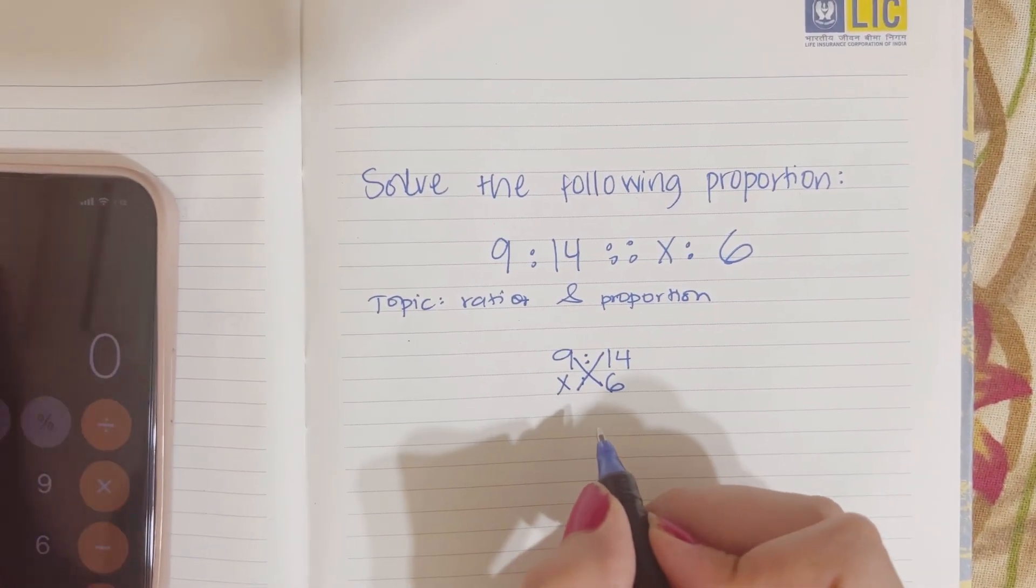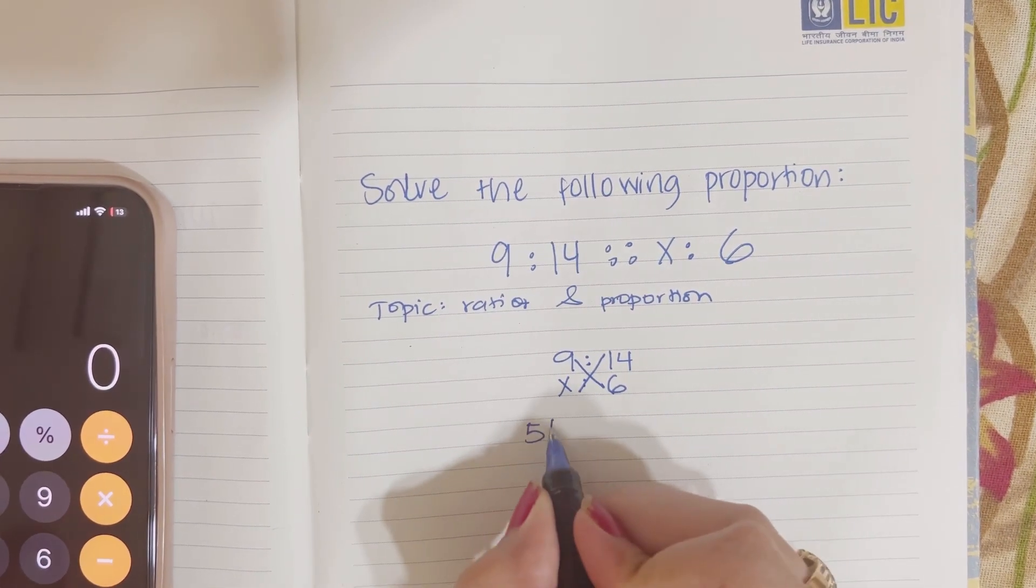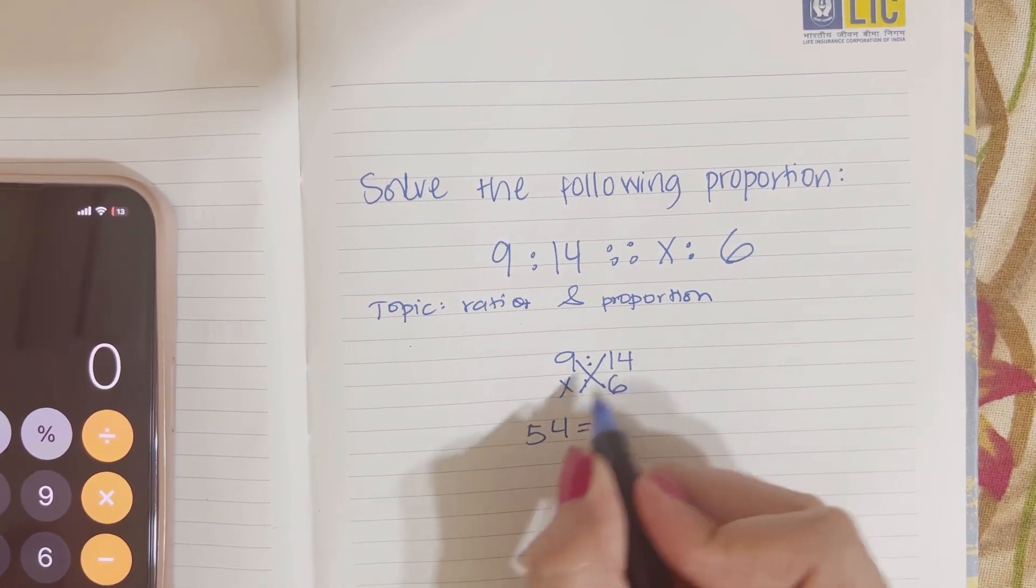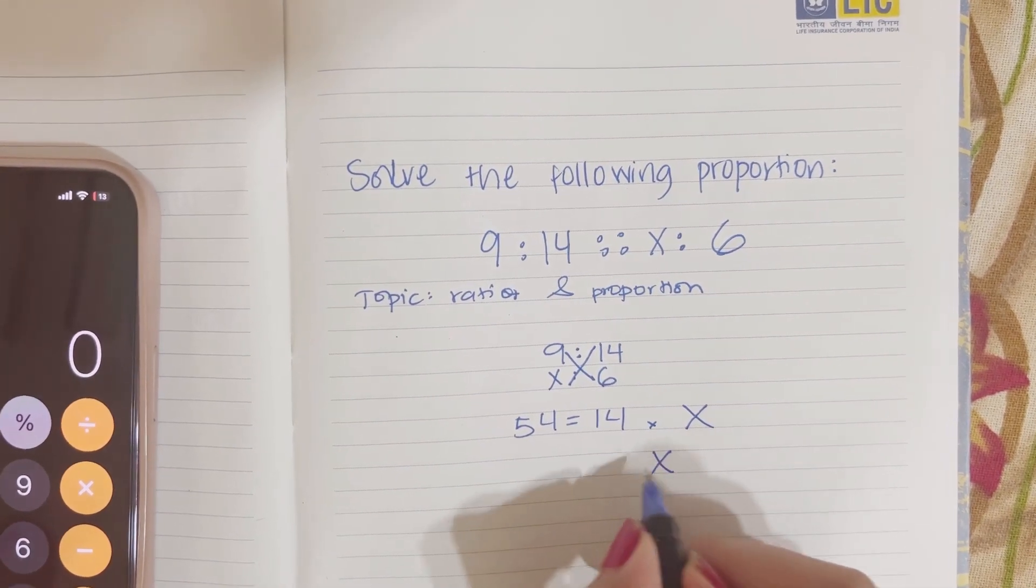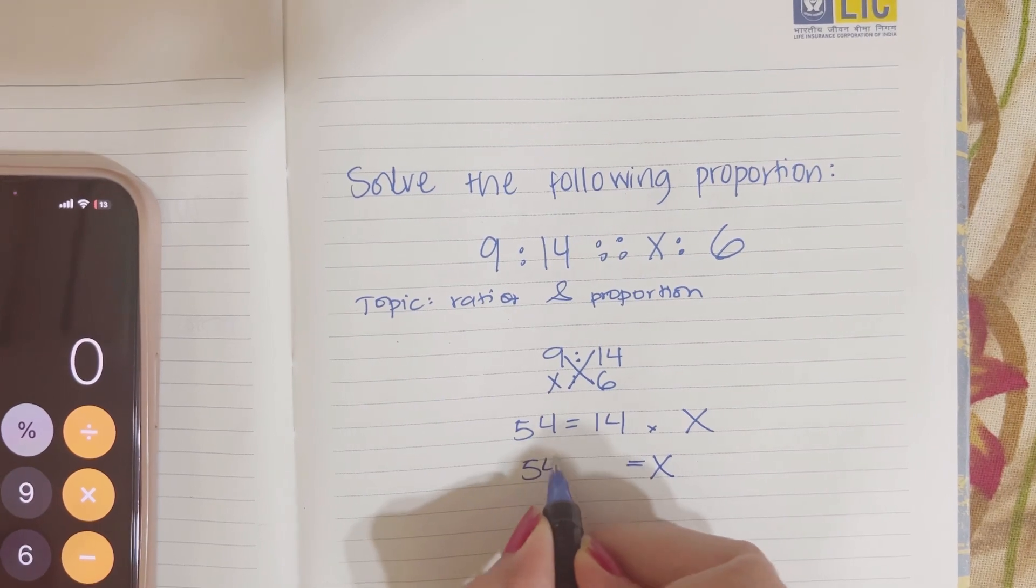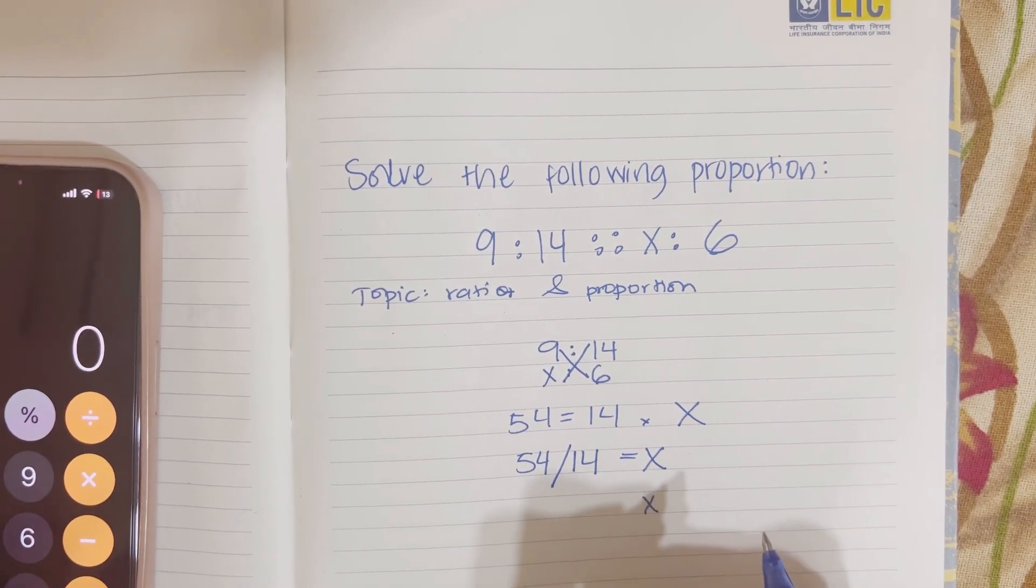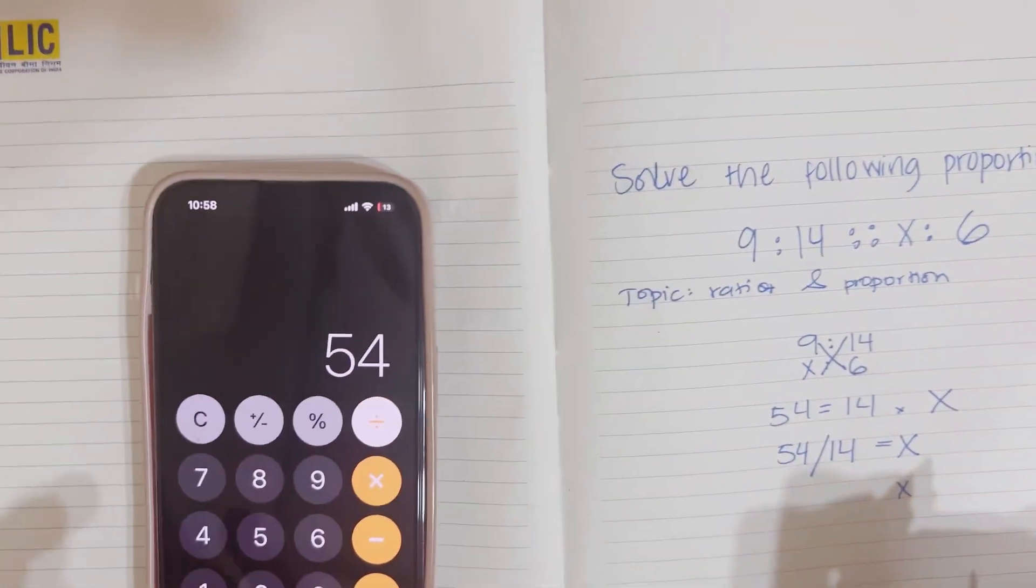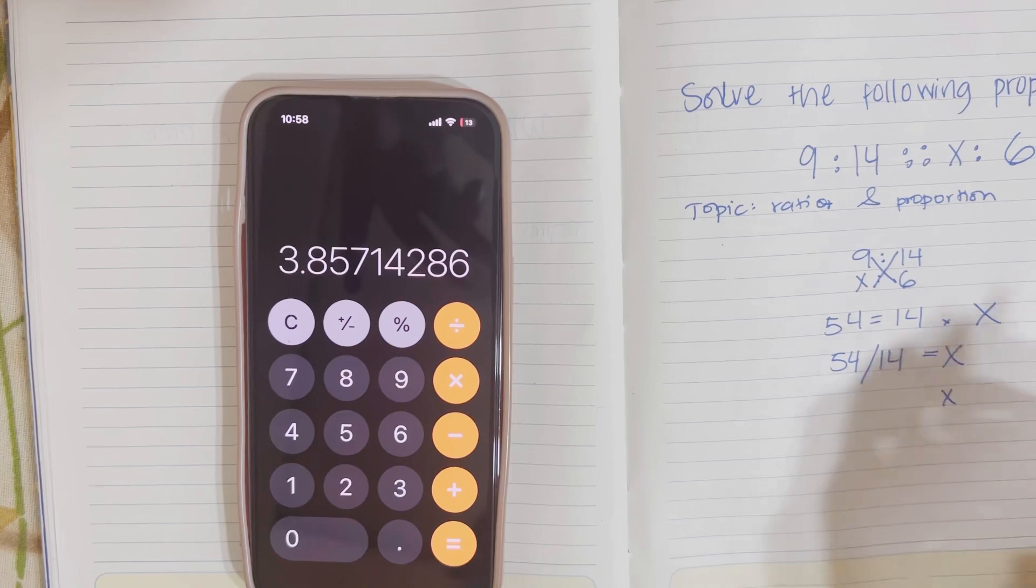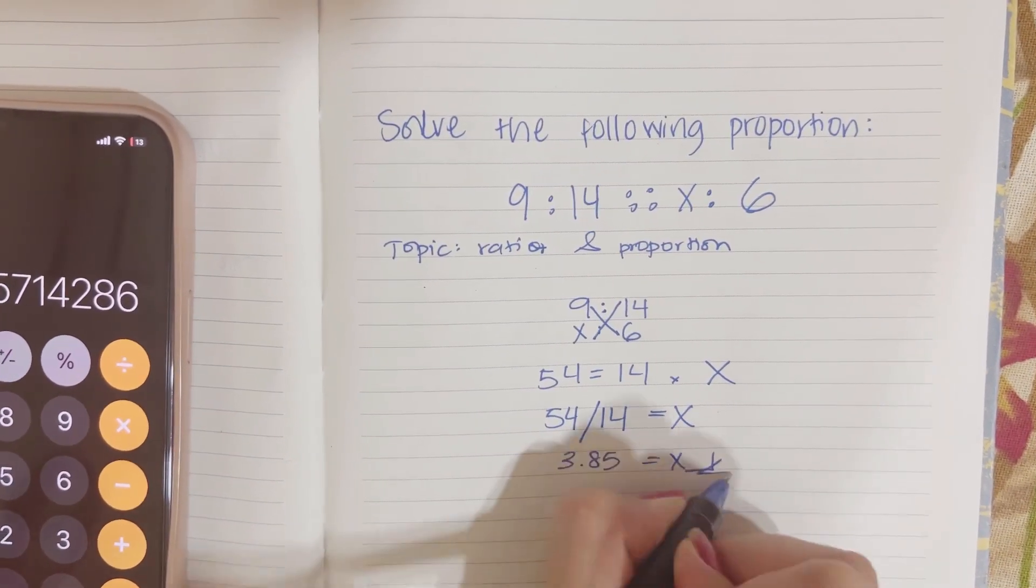9 multiplied by 6 is 54 equals 14 multiplied by x. So x stays and then 54 gets divided by 14, which you use a calculator. And it's 3.85. That's it.